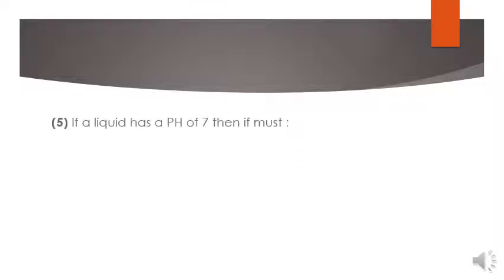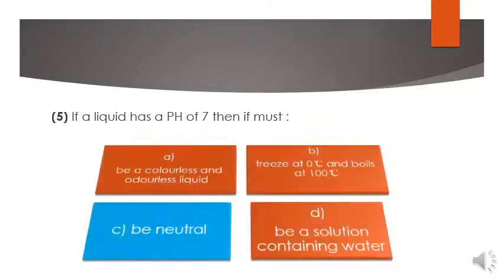Fifth MCQ: if a liquid has a pH of 7, then it must be colorless and odorless liquid, freeze at 0 degrees centigrade and boil at 100 degrees centigrade, be neutral, or be a solution containing water. You know that pH 7 means be neutral. So C option is the right option.